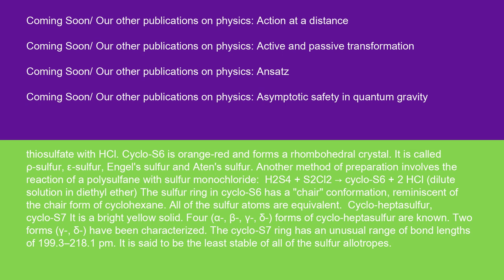Another method of preparation involves the reaction of a polysulfane with sulfur monochloride: H2S4 + S2Cl2 → cyclo-S6 + 2 HCl (dilute solution in diethyl ether). The sulfur ring in cyclo-S6 has a chair conformation, reminiscent of the chair form of cyclohexane. All of the sulfur atoms are equivalent.